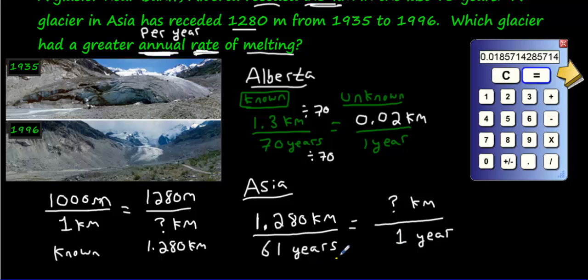We divided by itself. Now divide this one by the same number and you'll get your answer. You're going to get 1.28 divided by 61, and that's going to make 0.02.